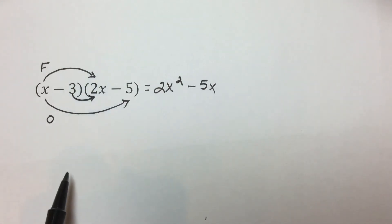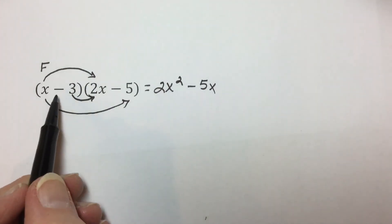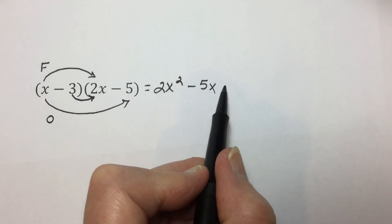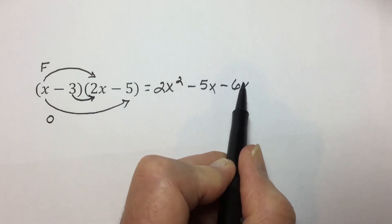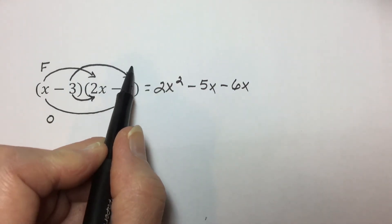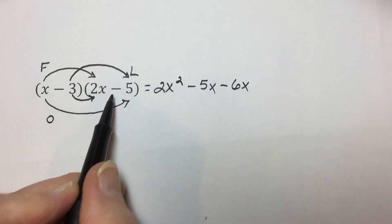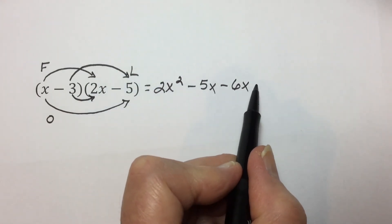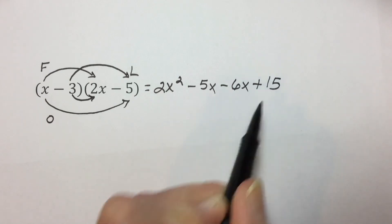I for inner terms multiplied together, negative 3 times 2X is negative 6X. And L for last terms, negative times negative is positive, 3 times 5 is 15.